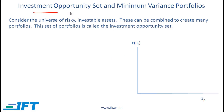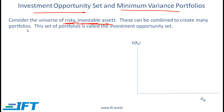Let's start with the investment opportunity set and the minimum variance portfolios. Consider the universe of risky investable assets — it's important to consider investable assets, because there are some assets like the Taj Mahal which are not investable. We are only concerned with investable assets, and in this discussion we are focused on risky assets, so there is no risk-free asset. These assets can be combined to create many portfolios — this set of portfolios is called the investment opportunity set.